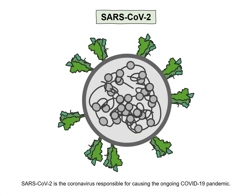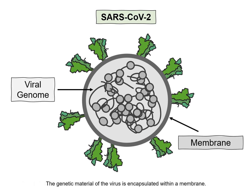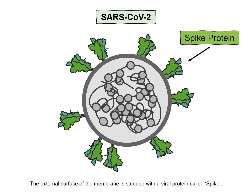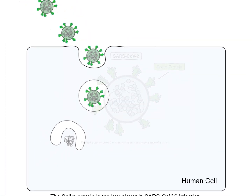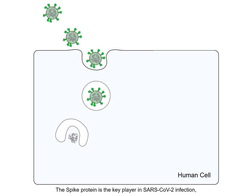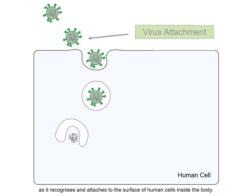SARS-CoV-2 is the coronavirus responsible for causing the ongoing COVID-19 pandemic. The genetic material of the virus is encapsulated within a membrane. The external surface of the membrane is studded with a viral protein called spike. The spike protein gives the virus its characteristic appearance of a crown, and is the key player in the SARS-CoV-2 infection as it recognizes and attaches to the surface of human cells inside the body.